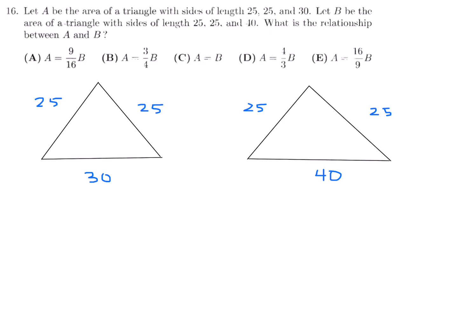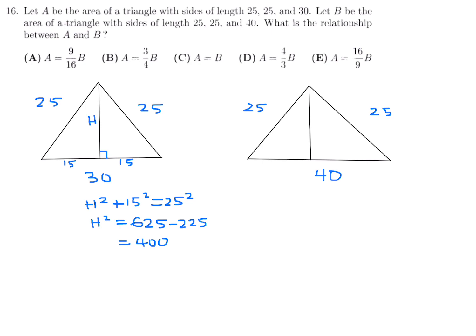For triangle A, the perpendicular bisects the base of 30 into two halves of 15. Using the Pythagorean theorem: h² + 15² = 25², so h² = 625 − 225 = 400, giving h = 20.